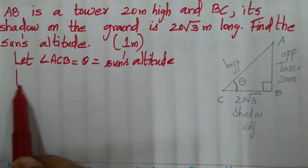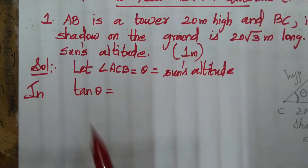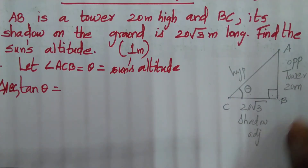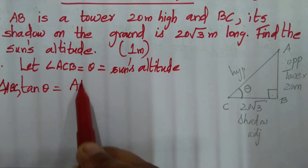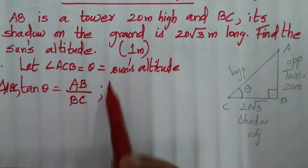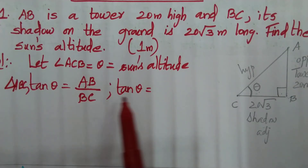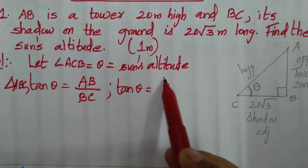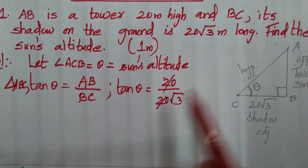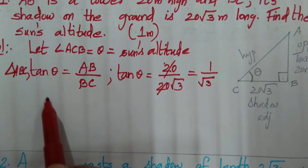So what will I write here? In triangle ABC, tan theta is equal to AB by BC. Tan theta equals AB by BC. AB is the height of the tower which is 20, and BC is the shadow which is 20 root 3. So tan theta equals 20 over 20 root 3. The 20s cancel, giving 1 by root 3.